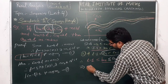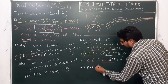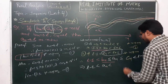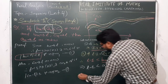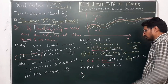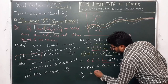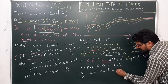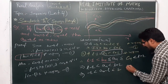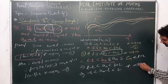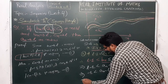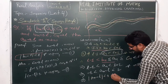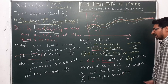Ultimately we can say l minus epsilon is less than an less than l plus epsilon, which means minus epsilon less than an minus l less than plus epsilon, and it is true for all n greater than or equal to M. Finally we can say that |an − l| is less than epsilon, and it is true for all n greater than or equal to M.